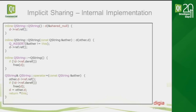Here are some code snippets from Qt showing how implicit sharing is implemented. The QString default constructor initializes the d-pointer and increments the reference count. The copy constructor just assigns the d-pointer to the other d-pointer and increments the reference count. The destructor decrements the reference count and frees the shared container if it reaches zero. The assignment operator first increments the reference count for the other object, then decrements for this object, frees if needed, and assigns the d-pointer. All of these operations are quite fast and avoid unnecessary copies.